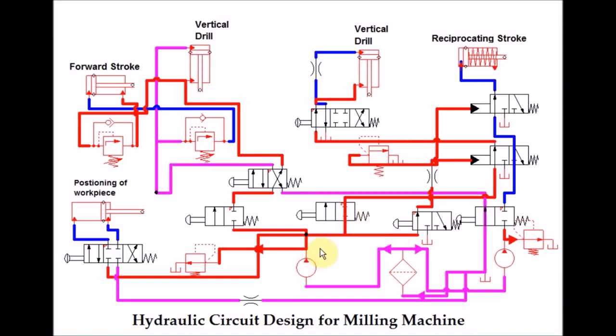So this is how our milling machine works. We have discussed two circuits about the milling machine. One is the longitudinal and vertical drill, and the second is with the reciprocating strokes that we can see also in our shaper machine. Thank you for watching this video.